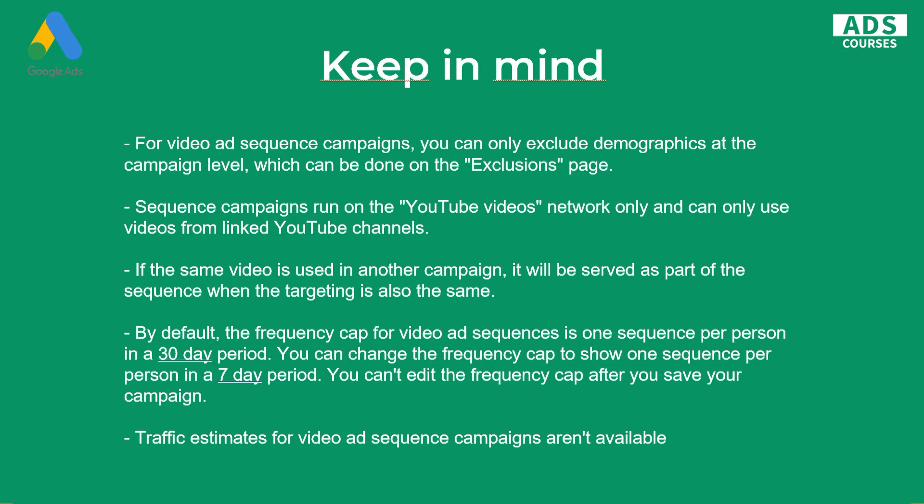By default, the frequency cap for video sequences is one sequence per person in a 30-day period. You can change it to a 7-day period, so you can choose between 30 days and 7 days depending on your aggressiveness and strategy. Keep in mind that you can't edit the frequency cap after you save your campaign — if you want to change it, you'll have to create a duplicate.